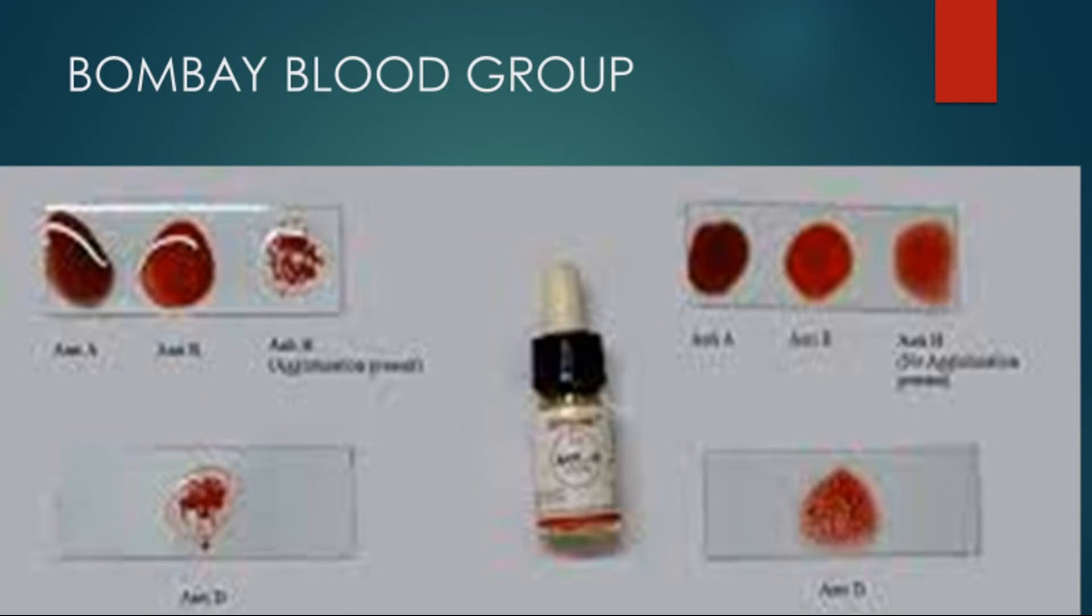In our previous videos we learned about ABO blood group system and Rh blood group system, but none of these blood group systems covered the Bombay blood group. So where does the Bombay blood group come from and why don't we hear about it so often?